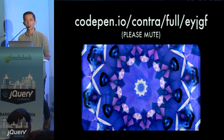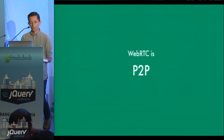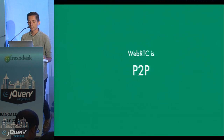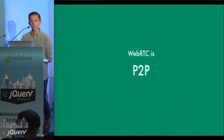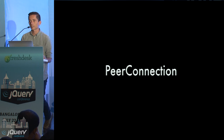Any CSS filters, transforms, whatever — the video DOM element works just as you'd expect. Most importantly, WebRTC gives us the ability to communicate directly with other people without going through central servers. The API for doing this is PeerConnection, which is where things start to get a little more complicated.